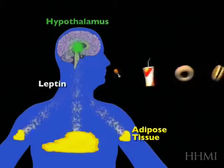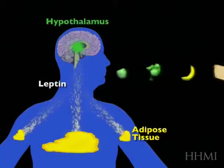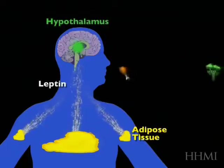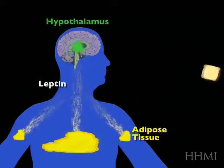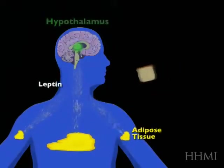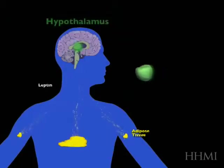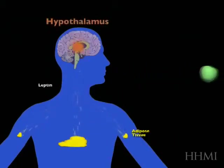So at equilibrium, at your normal weight, leptin is made and you're eating different types of food. Now let's imagine you were starving or you went on a diet. Your fat mass would contract and you would make less leptin.